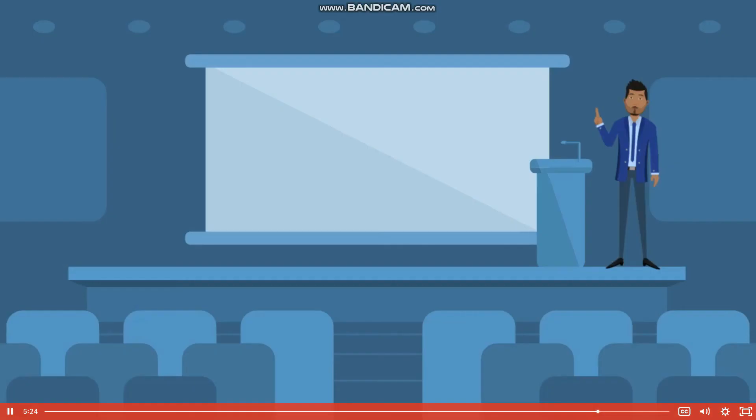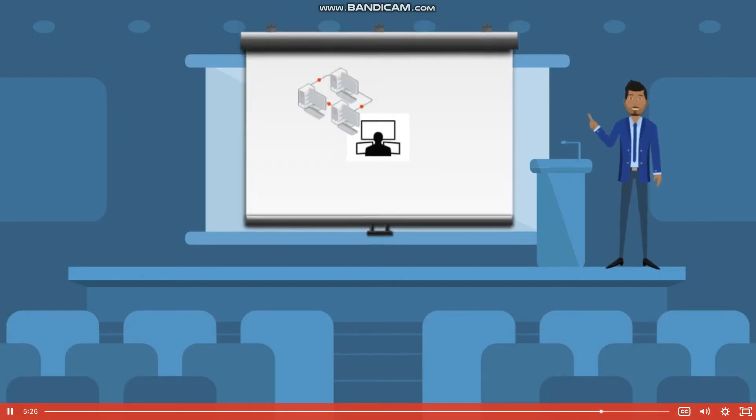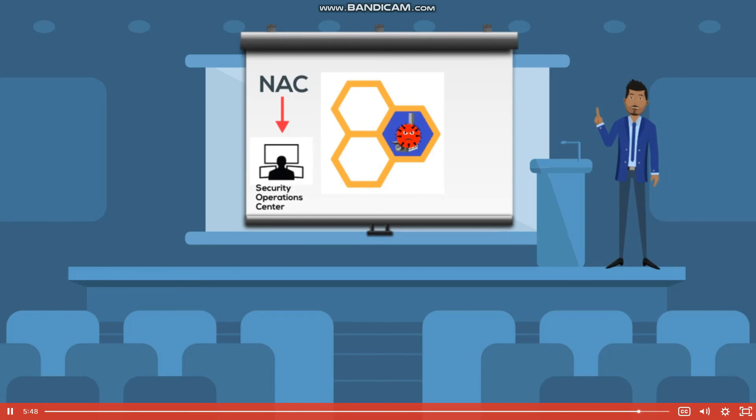The NAC solution should have a centralized architecture to enable an efficient coverage of large and multi-site networks. It should possess the ability to micro-segment the network to limit devices to only those resources that are required. Critically, NAC should also be integrated into the security framework, so that when a breach is detected, NAC will automatically notify the Security Operations Center and coordinate with other security devices to isolate and expunge the contagion.